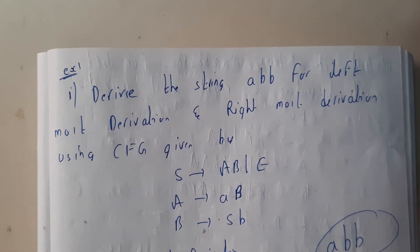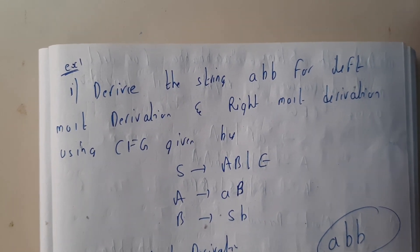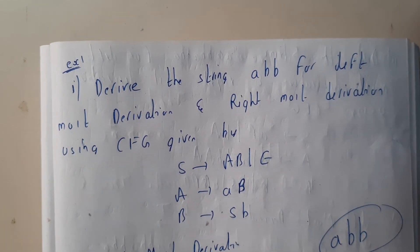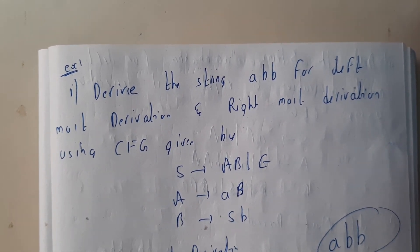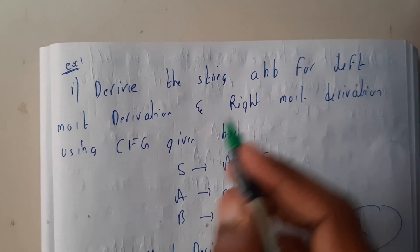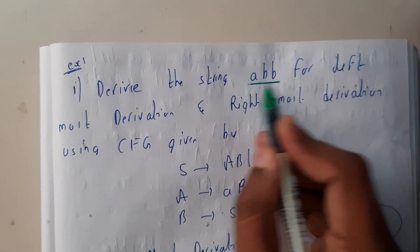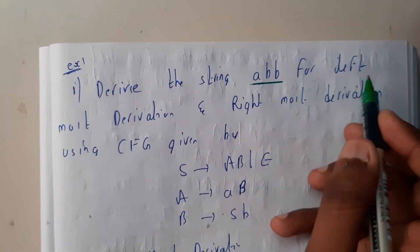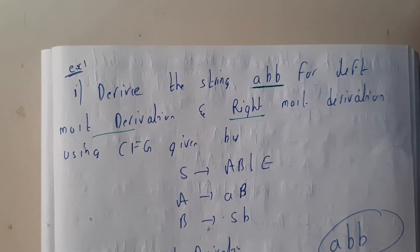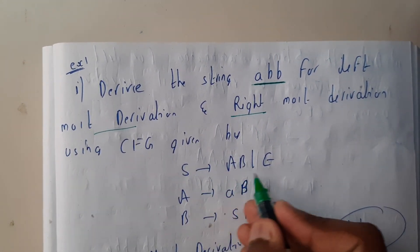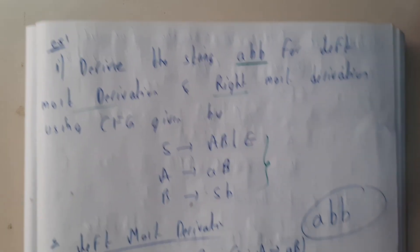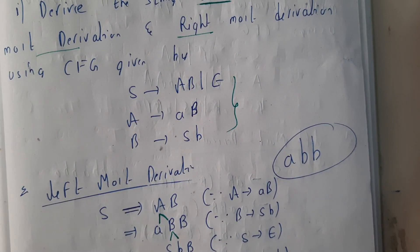Hello guys, we are back with our next tutorial. In this tutorial let us go through some problems on leftmost derivation and rightmost derivation. The given question is: derive the string 'abb' from leftmost derivation and rightmost derivation from the given CFG productions.